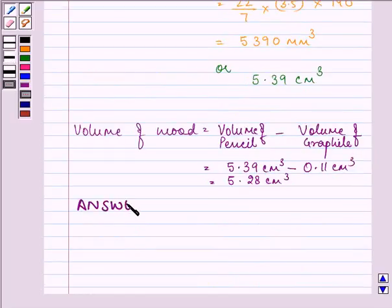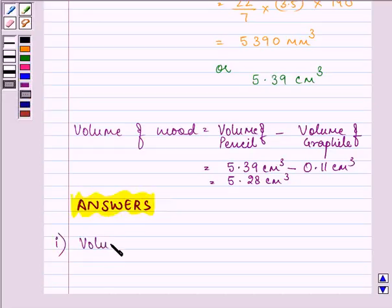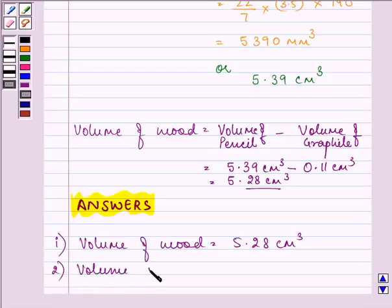The final answers are: volume of wood is 5.28 cm³, and volume of graphite is 0.11 cm³.